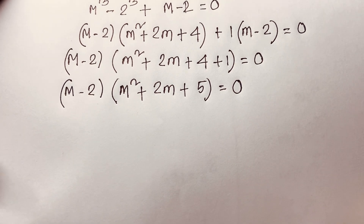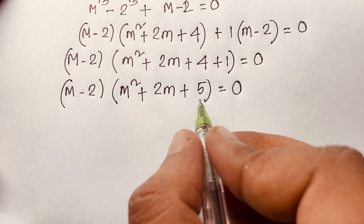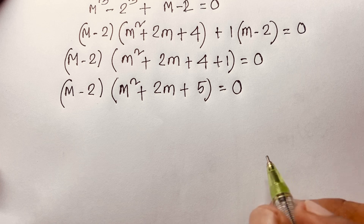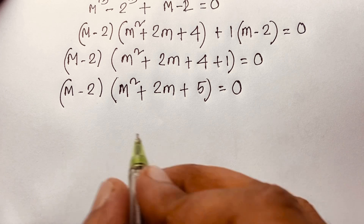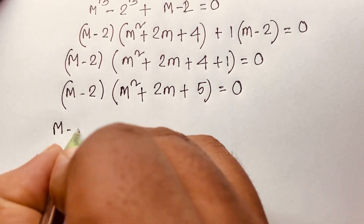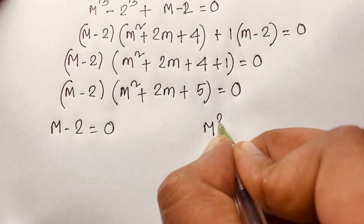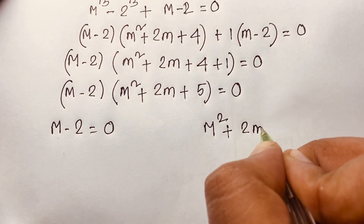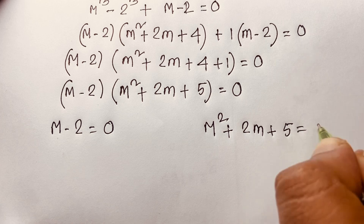Now we have two cases: the first case is m minus 2 equals 0, and the other case is m squared plus 2m plus 5 equals 0.